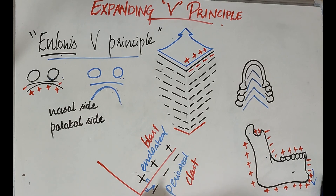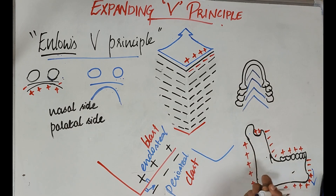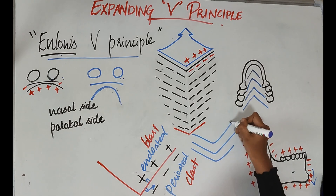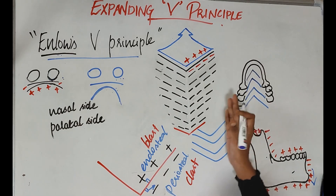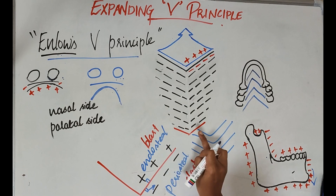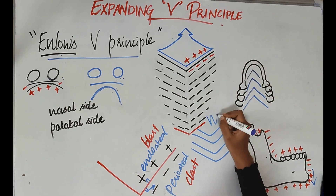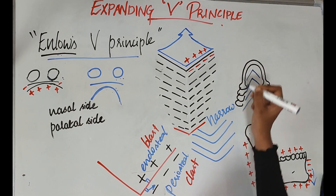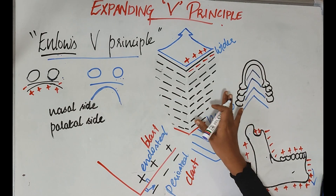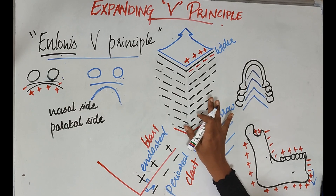As bone deposition and resorption occur continuously, the bone moves from its first position — the narrow end of the V — toward the wider end. This movement from narrow to wider end with growth and expansion is the whole concept of Enlow's V principle.